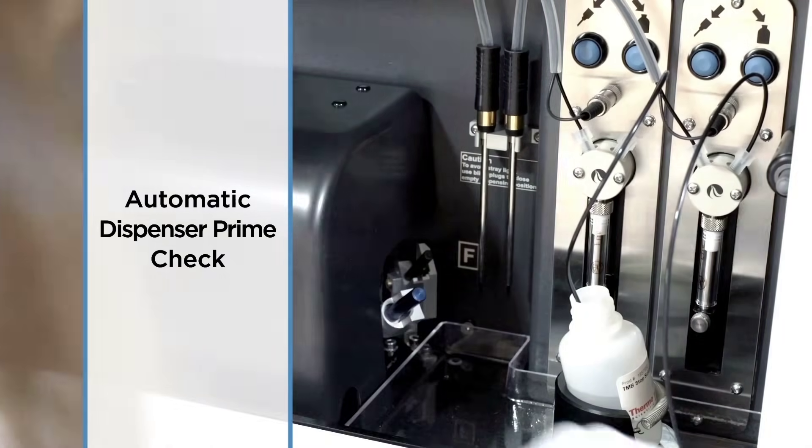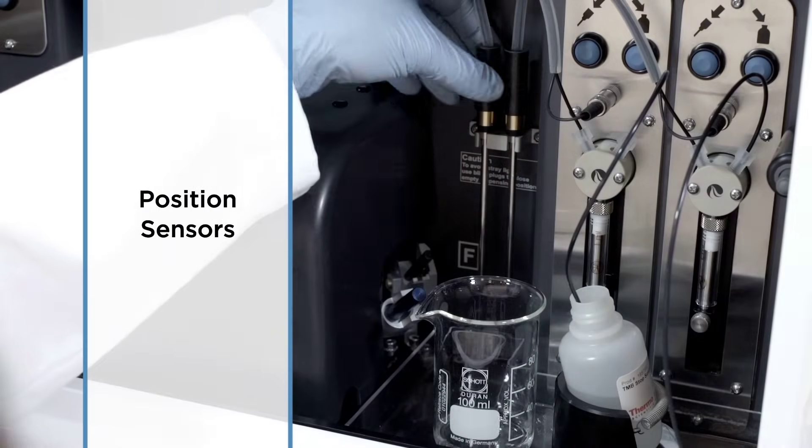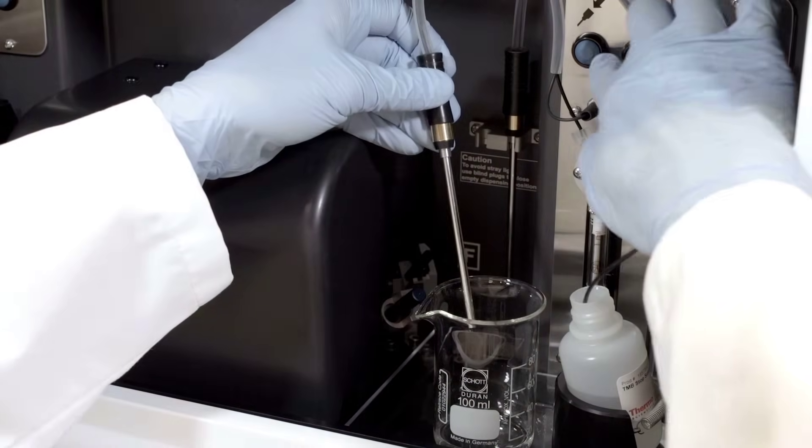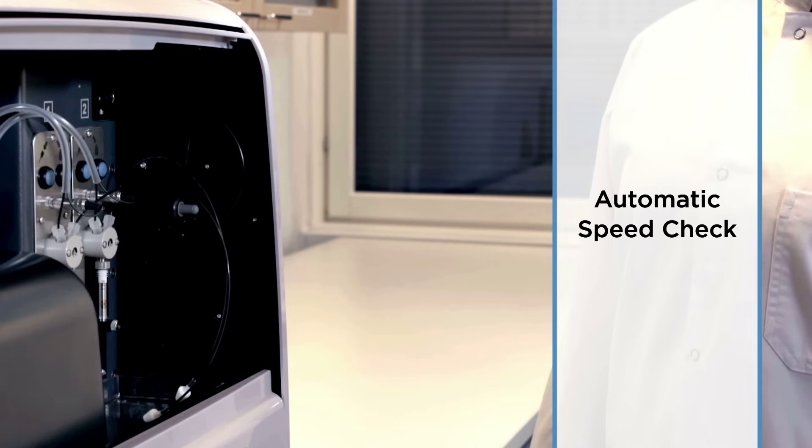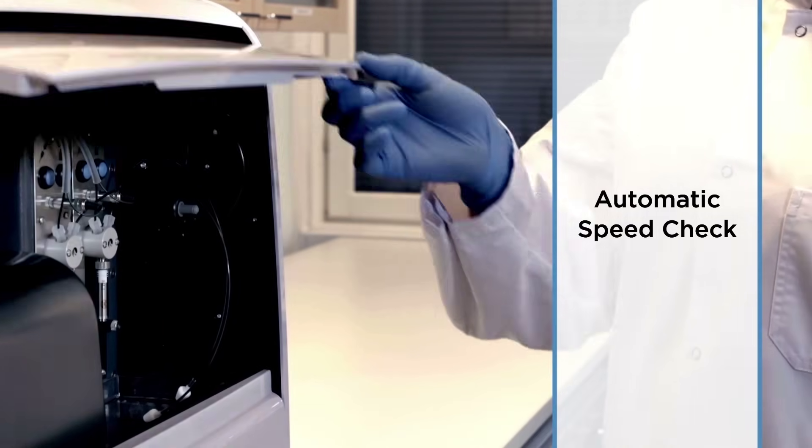Forget to prime? The VarioScan Luxe reminds you. Dispensing head misaligned? You'll know it. And when it comes to preventing spills, the VarioScan Luxe sets the maximum shaking speed based on plate format. You'll protect your samples and your equipment.